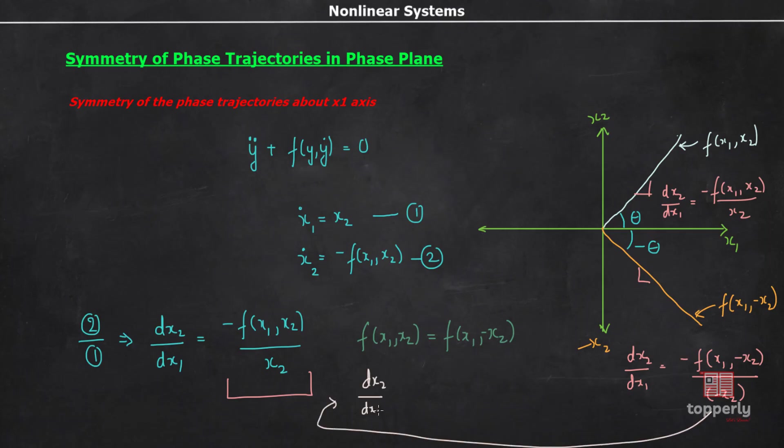dx2 by dx1 equal to minus of f of x1 comma minus x2 by minus x2. Now, since f of x1 comma minus x2 is equal to f of x1 comma x2, write this down as minus of f of x1 comma x2 by minus x2. Now, if I write this equal to p, then you can see that this much part is equal to p, therefore this equation becomes minus p.